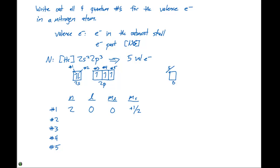The only difference between electron number one and electron number two is the spin — we're in the same subshell, the same orbital, the same spot in that orbital. The only thing that's different is the spin. So from electron number one to electron number two, the only thing that really changes is the spin.